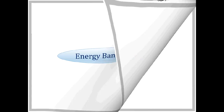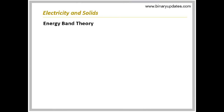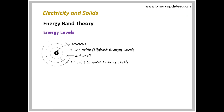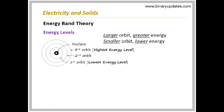Energy band theory. The classification of solids can also be based on the energy band diagram. Recalling the concept of the atomic model, where each orbit has a fixed amount of energy associated with it. For a larger orbit, greater energy, and for a smaller orbit, lower energy. The energies of different orbits represent different energy levels.